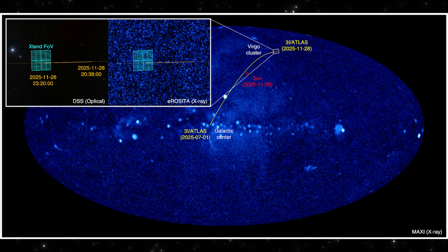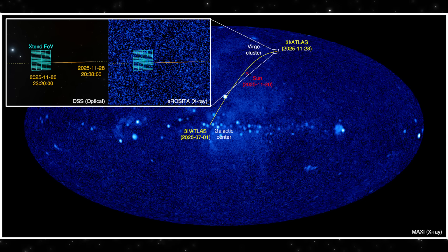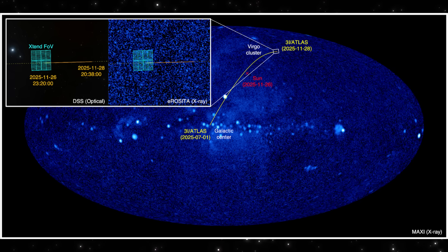What this means is simple. Whatever is powering this object is energetic enough to leave a signature on instruments designed to study black holes, neutron stars, and hot gas near the galactic center. A comet shouldn't show up on a map like this. But three I-Atlas did. And that pushes the whole story into territory no one expected.